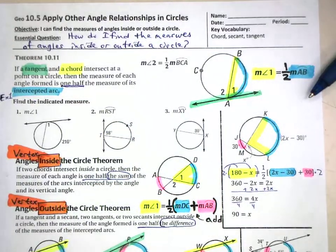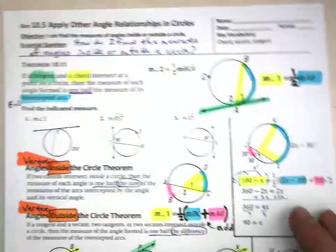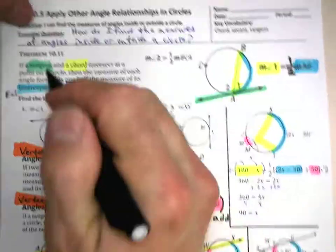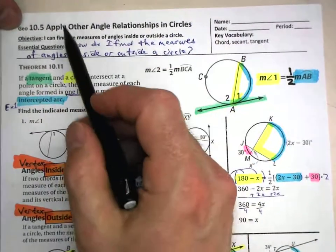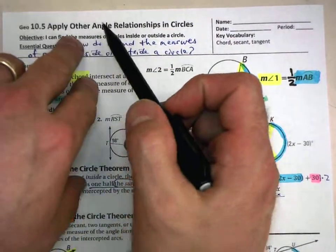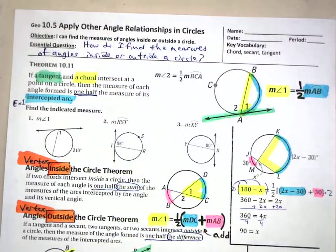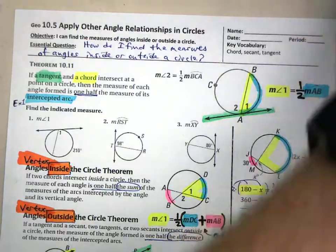Welcome. Here we are at 10.5: Apply other angle relationships in circles.